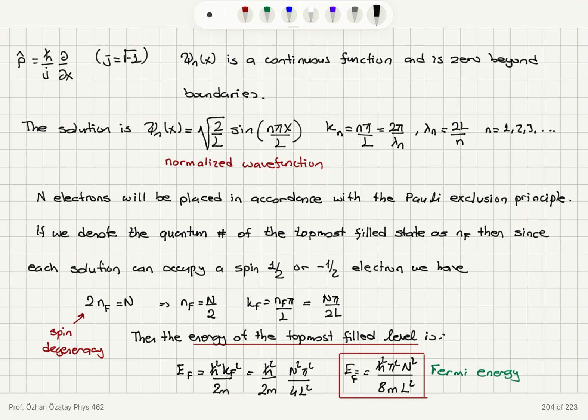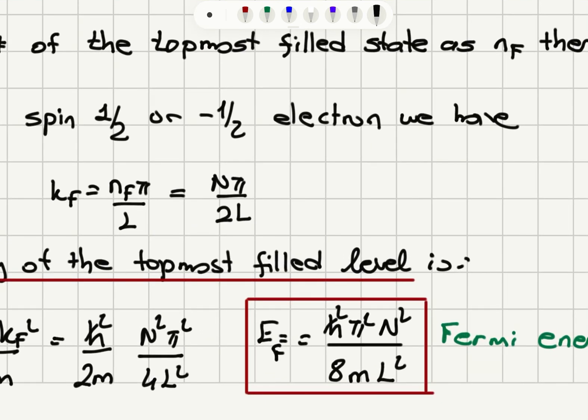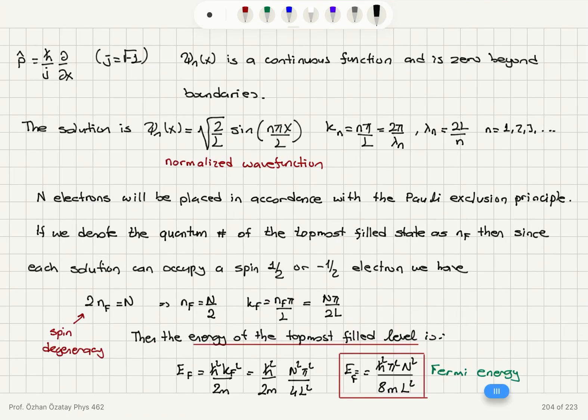The maximum k value is k_F = n_F · π/L = Nπ/2L. The energy of the topmost filled quantum state — the Fermi energy — is E_F = ℏ²k_F²/2m = ℏ²/2m · (Nπ/2L)² = ℏ²π²N²/8mL².